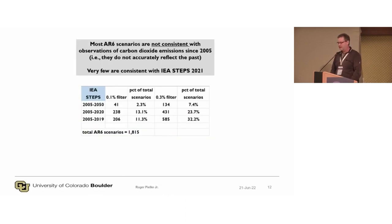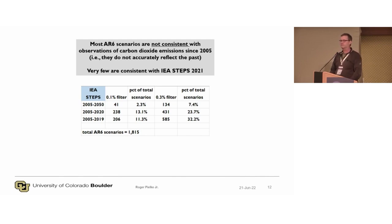One troubling finding is that many of the scenarios in the AR6 database are already not plausible — most because they don't faithfully replicate the past. Scenarios have been put in the database which may have uses in scientific research but which do not faithfully replicate the observed history of the energy systems. Again, that's problematic for policy.